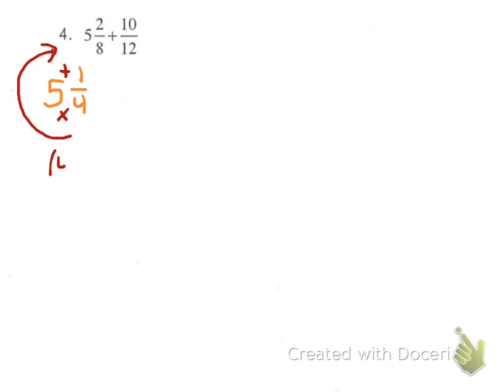You could write that out like this. 4 times 5 plus 1 on the top and we would still have 4 on the bottom. So, 4 times 5 is 20 plus 1 is 21 over 4 and we need to add 10 twelfths to that.